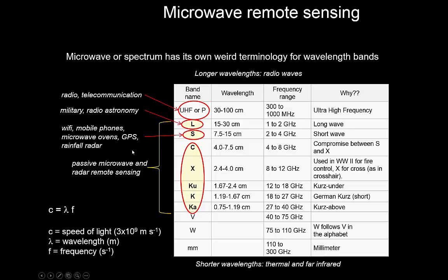You also see some of the applications here. We'll be mostly talking about passive and active microwave remote sensing in Ka to L bands, but if you look at astronomy and telecommunication, they tend to work in longer wavelengths than that.